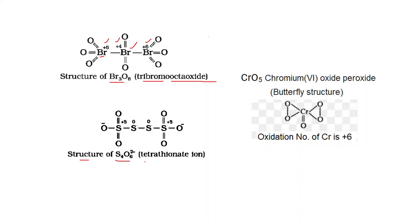Now consider the structure of S₄O₆²⁻, the tetrathionate ion. In this case, the oxidation number of the two middle sulfur atoms is 0, while the two side sulfur atoms each have an oxidation number of +5, as determined by electronegativity considerations.